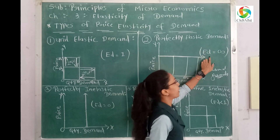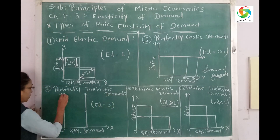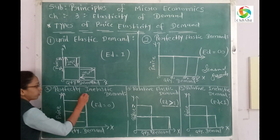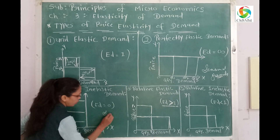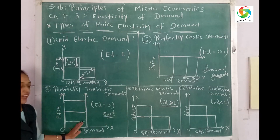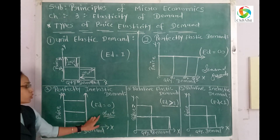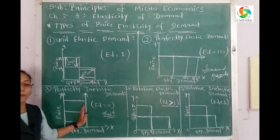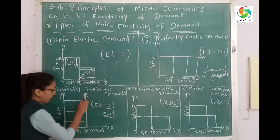Third: perfectly inelastic demand. It means the price of the product may increase or decrease, but the demand of the product remains stable. For example, salt — no matter how much the price increases or decreases, demand stays stable. We use, say, 1 kg of salt per month, and that does not change with price. Here elasticity of demand is equal to zero.